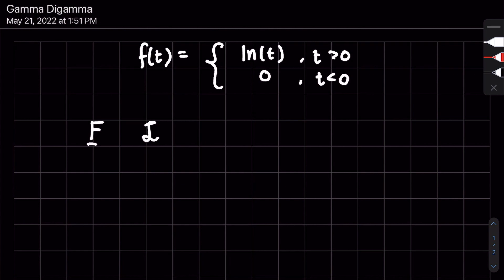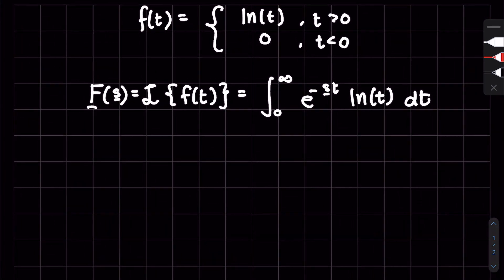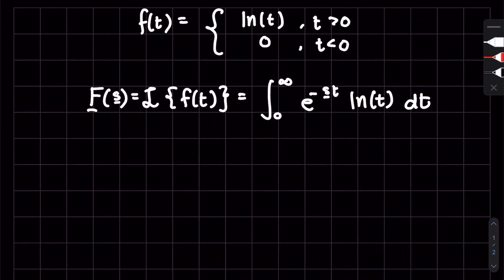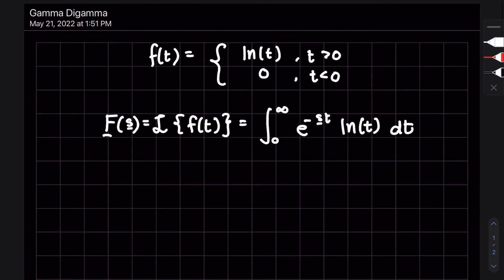So capital F, which can be complex of a complex variable s, is the Laplace transform of f of t. It is also the integral from zero to infinity, e to the minus st, natural log of t, dt. Okay, I've done nothing fancy, just plugged in the definition.